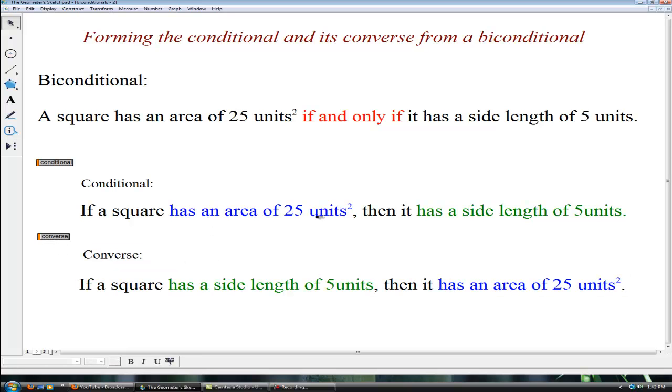The converse we would simply exchange or switch the hypothesis and conclusion. So our converse reads if a square has a side length of 5 units then it has an area of 25 square units.